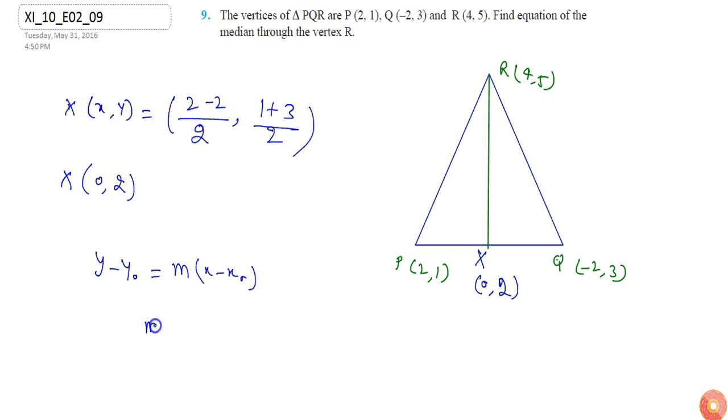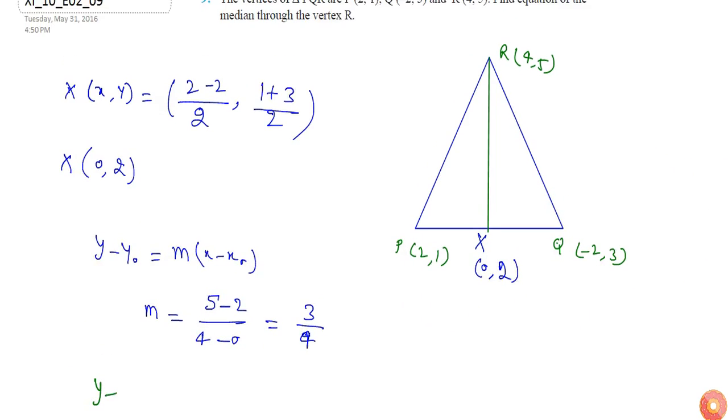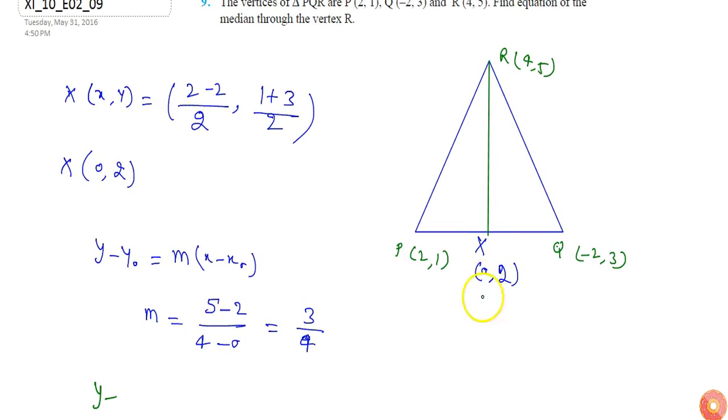First, the slope of the line will be (5-2) divided by (4-0), so it will be 3/4. Now the equation of the median will be... I can use either (4,5) or (0,2) since both points are points through which the line passes.